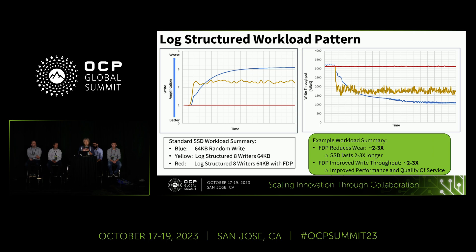This diagram shows three scenarios. The blue line is vanilla — just 64KB random write pattern — and as expected it goes above three in write amplification, with write throughput at about one-third. The yellow line assumes every application is doing log-structured write pattern, but they don't know each other and aren't cooperating. With that situation, write amplification is still over two — it helps a little, but not much. The red line uses the same log-structured write pattern with an FDP drive, where each writer doesn't know the others. With FDP, write amplification stays at one and we see no performance drop.